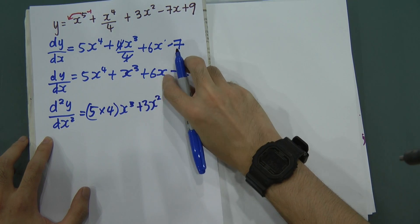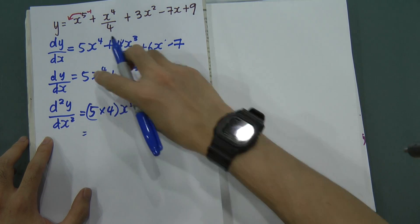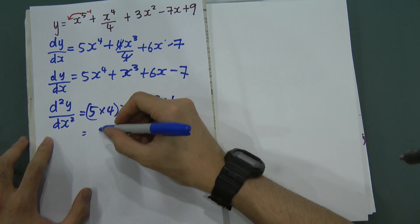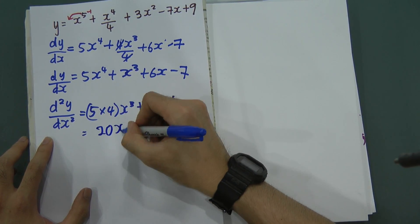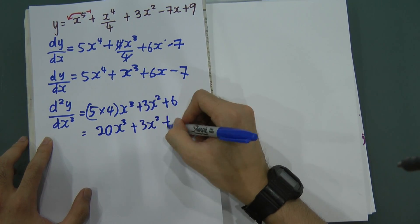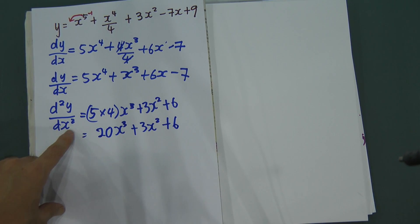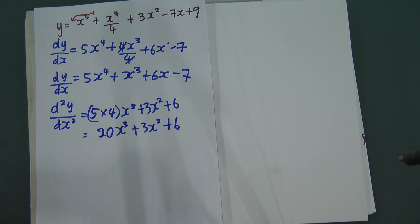And then plus 6x, sorry, just write plus 6. Minus 7, we're missing. So, 4 multiple 5, we will get 20. So, 20x cubed plus 3x squared plus 6. This is differentiate the second time. Call d2y divided by dx squared.